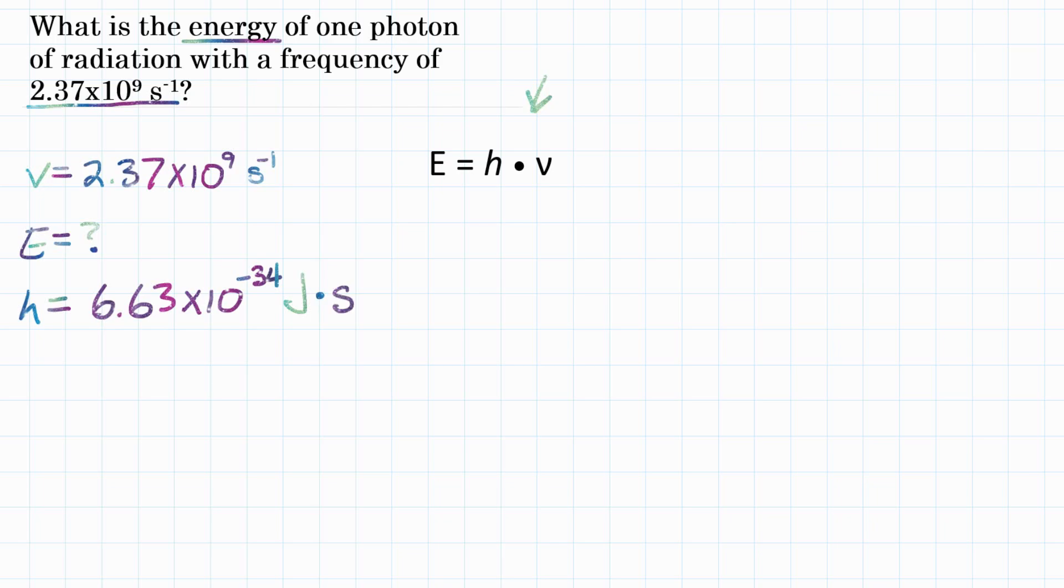So we have everything we need. Let's plug in the equation. So again, E is energy is equal to Planck's constant, 6.63 times 10 to the negative 34 joules times seconds. And then we're going to multiply that by V frequency, and frequency was given to us. And that is 2.37 times 10 to the 9th, and those units are seconds to the negative 1 power.